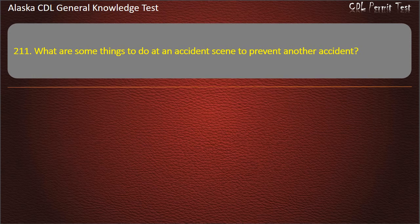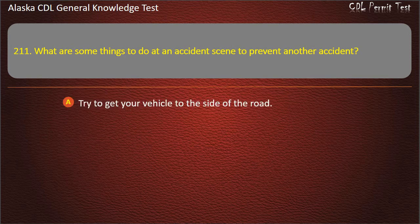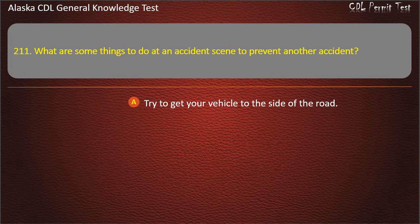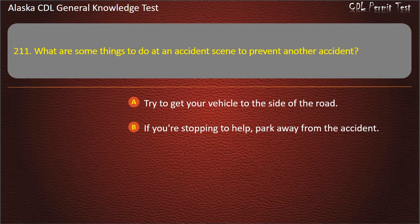Question 211. What are some things to do at an accident scene to prevent another accident? Try to get your vehicle to the side of the road. If you are stopping to help, park away from the accident.